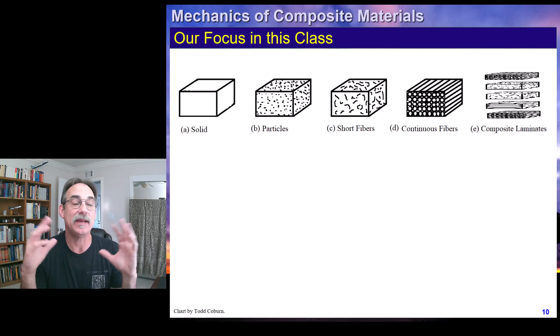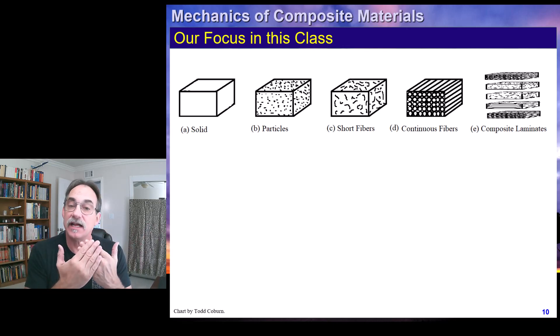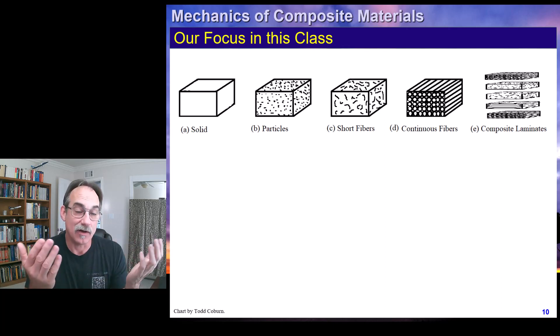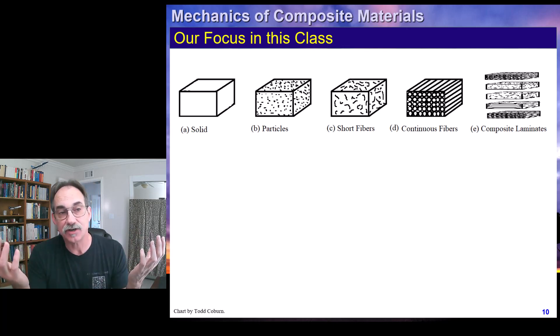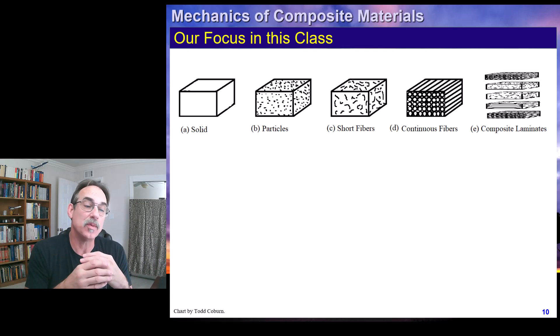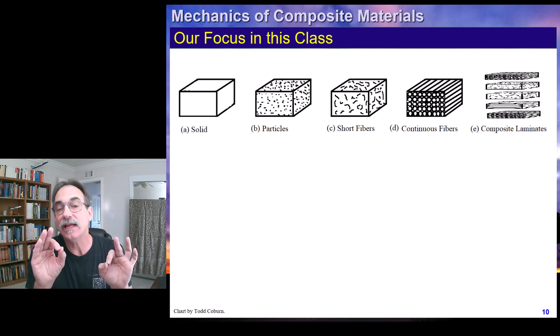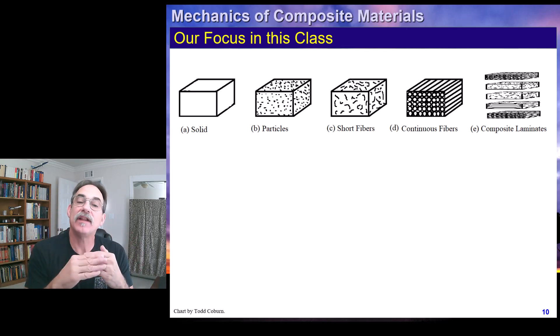Now, each of these layers can be any material. It's very common to use fiber reinforced composites for these layers. Honeycomb is also very common for core-like material. We can also use solids and isotropic materials like aluminums or steels. We can use balsa wood. Any layer can be nearly anything as long as it is predictable.